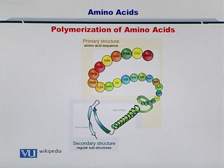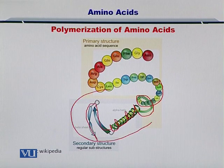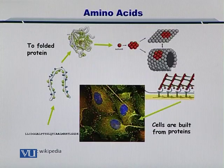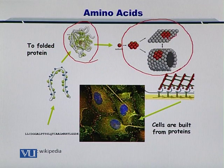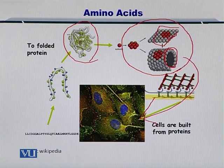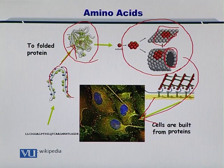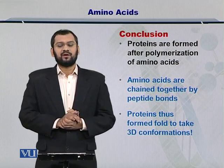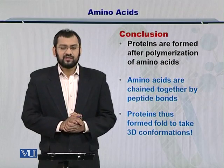After the polymerization of amino acids, the amino acids fold into structures and therefore become folded proteins. The folding of these amino acid chains is very important to impart function onto the proteins. Once you have proteins that are folded together, taking forms of different sheets and barrels, they are active within the cell. In conclusion, proteins are polymerized after the amino acids come together and are chained by peptide bonds, and the proteins take 3D structures and forms that are important towards functionalizing these proteins.